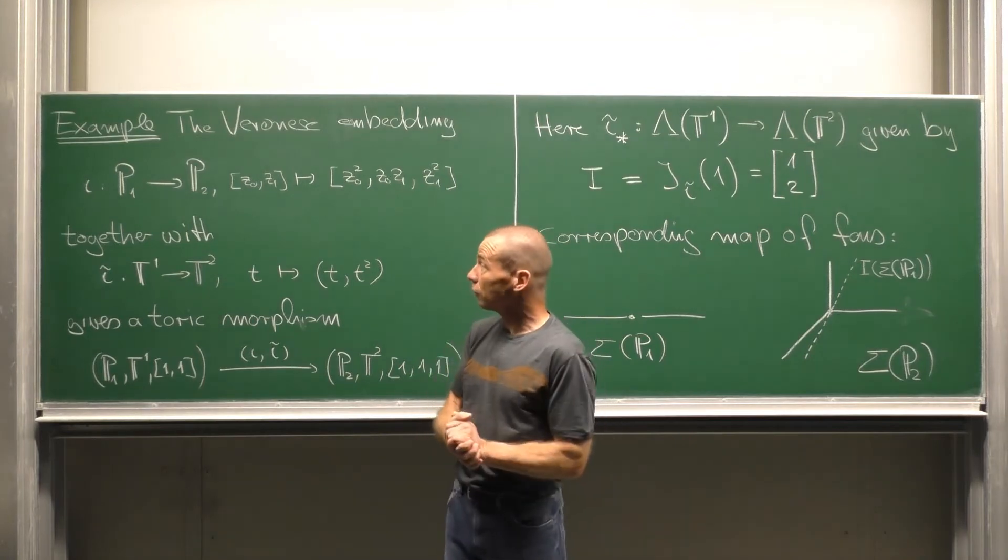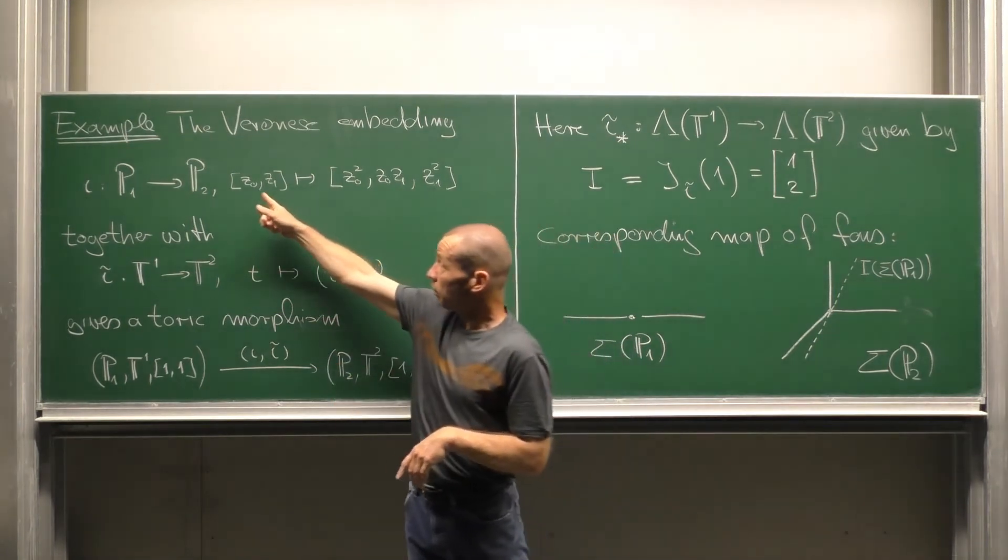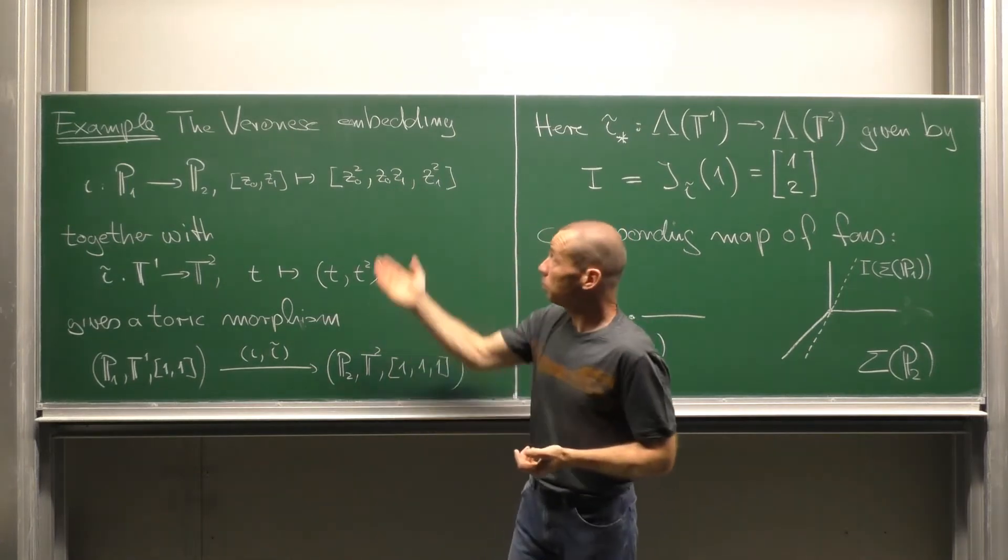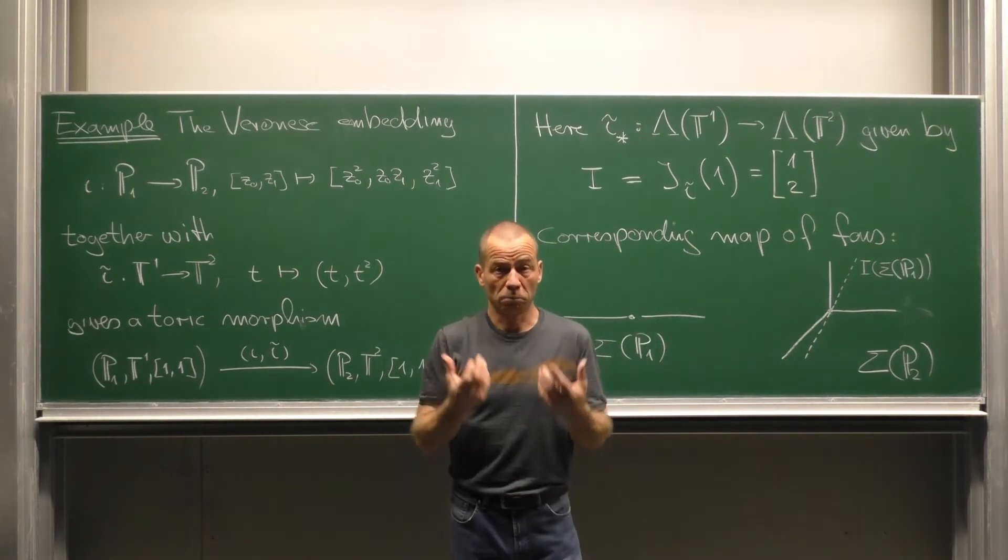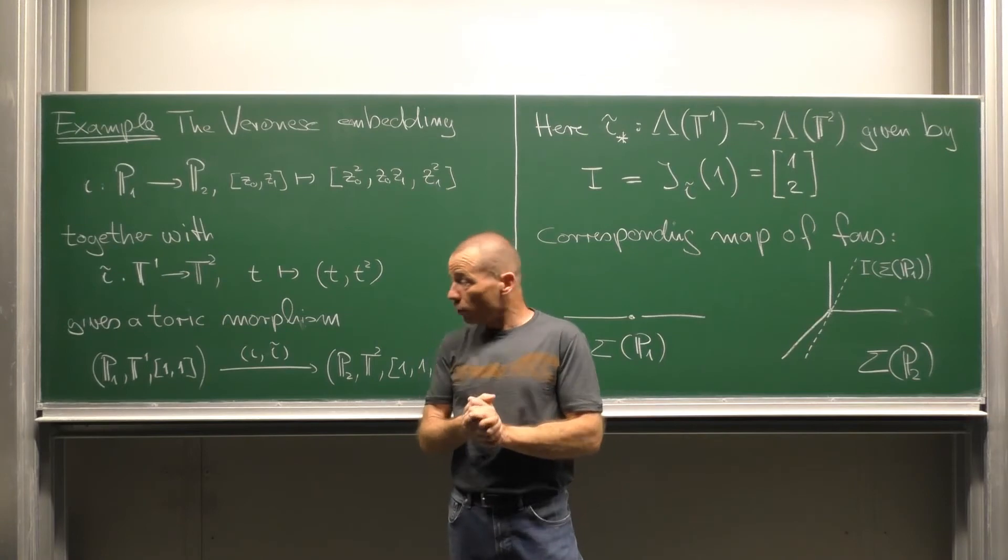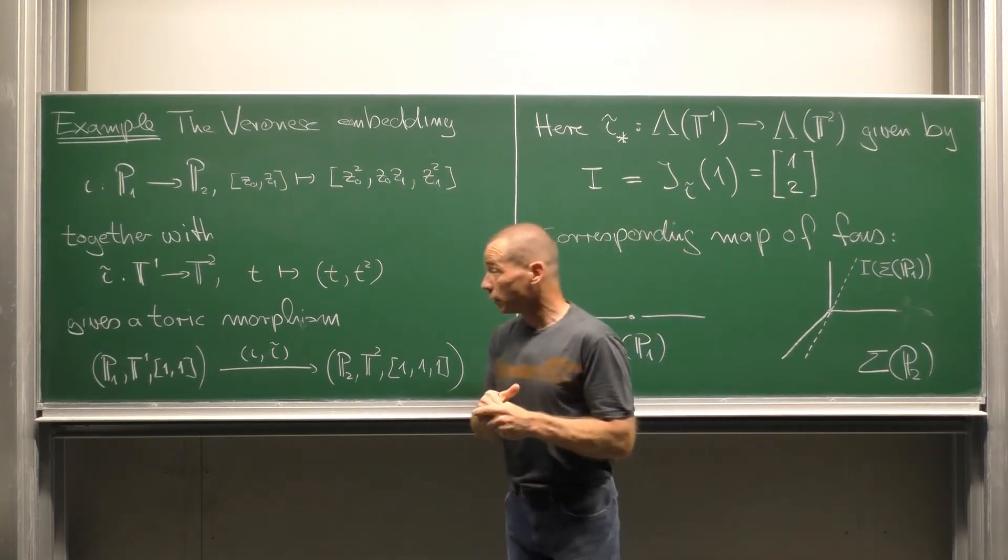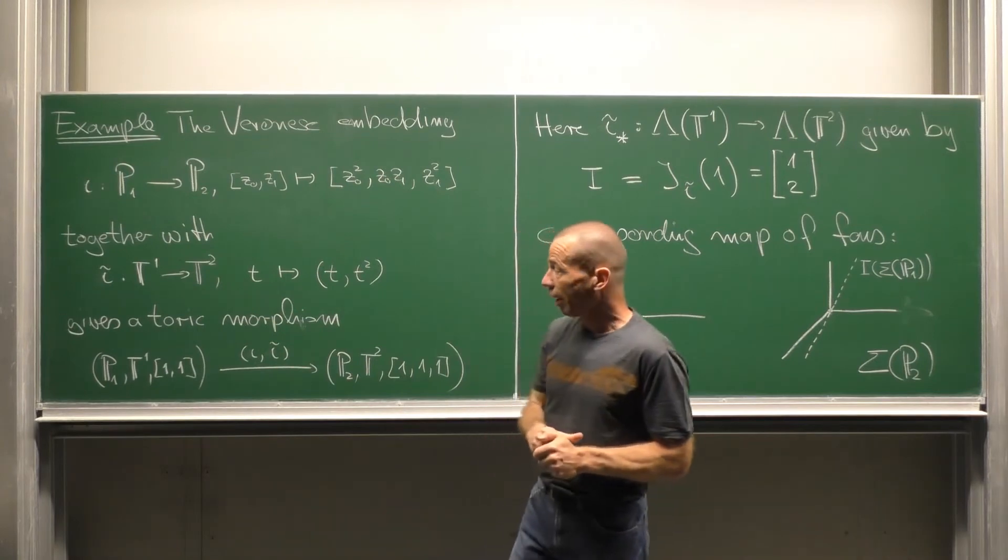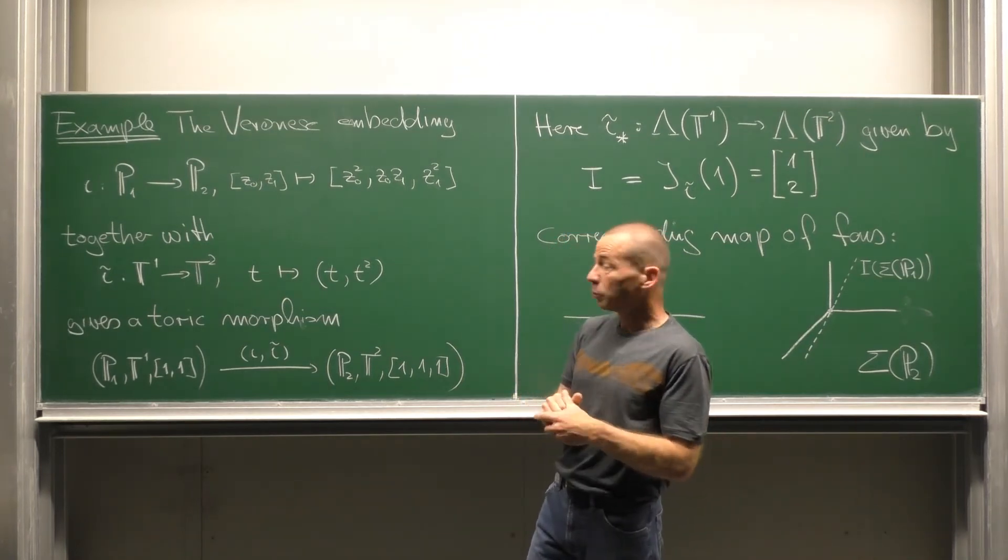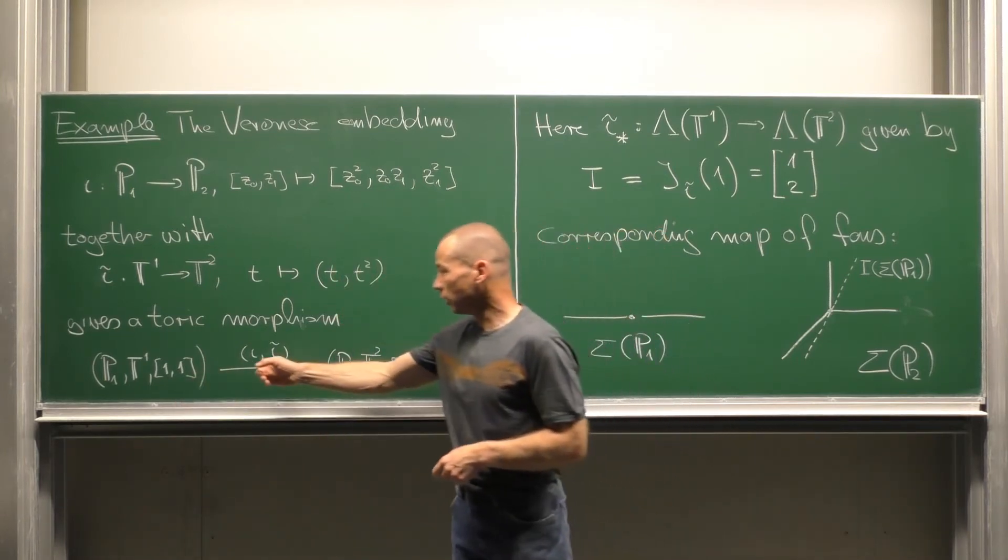Here's another example of a toric morphism. The Veronese embedding from P¹ into P². It sends a point (Z₀,Z₁) to (Z₀ square, Z₀Z₁, Z₁ square). That means we put here all the monomials of degree 2. This Veronese embedding is an example of a toric morphism. As I said, we need the accompanying homomorphism of the acting tori. It goes from T¹ to T² and sends an element T to (T, T square). This works out. We obtain a toric morphism from P¹ to P² with the standard toric structures by the pair (φ, φ tilde).